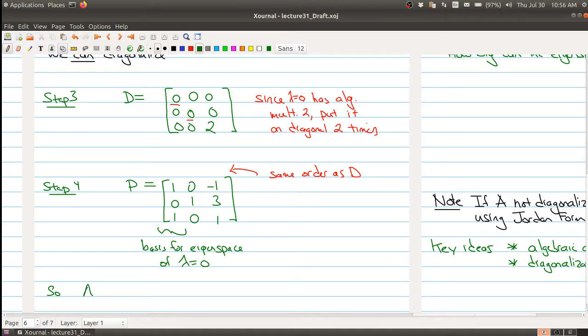So the matrix A is equal to this matrix P times this matrix D times the inverse of the matrix P, which we're not usually calculating, because it adds more work to the calculation.